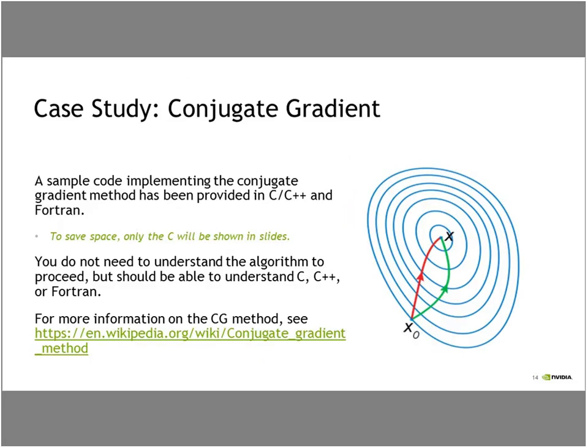As an example, we've provided in our labs a code that solves the conjugate gradient method. You don't necessarily need to understand what this does, but basically these blue lines represent a gradient and the algorithm tries to find the minimum along that gradient. We've provided source code in C, C++, and Fortran. If you want to read more, there's a Wikipedia link provided.